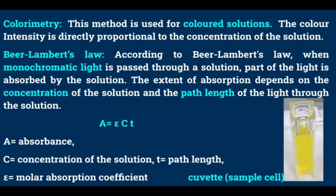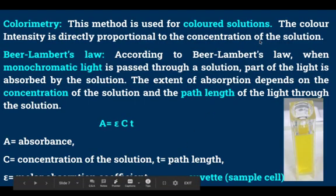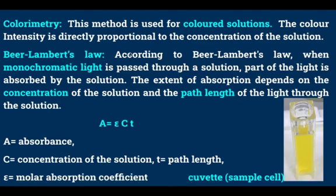This method is based on colorimetry. Colorimetry is an instrumental method of analysis used for colored solutions. The color intensity is directly proportional to the concentration of the solution. Colorimetry instrumentation is based on Beer-Lambert's Law. According to Beer-Lambert's law, when monochromatic light is passed through a solution, part of the light is absorbed by the solution.